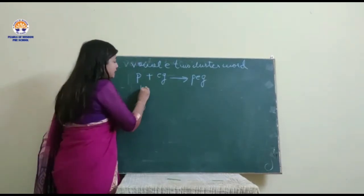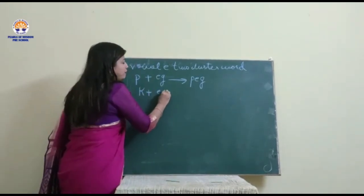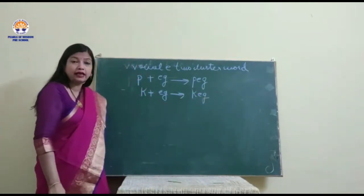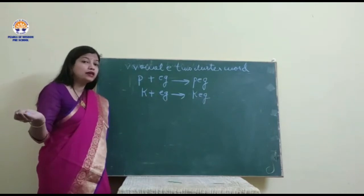Now, by adding a consonant K in front of EG, what does it become? It becomes the word keg, and keg is just like a drum.